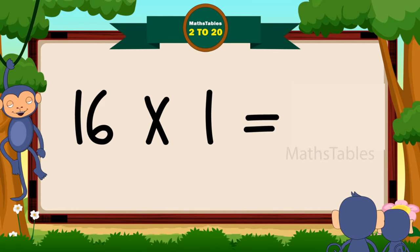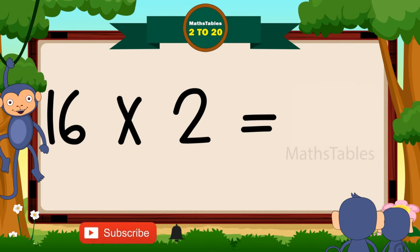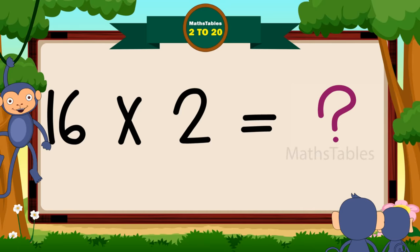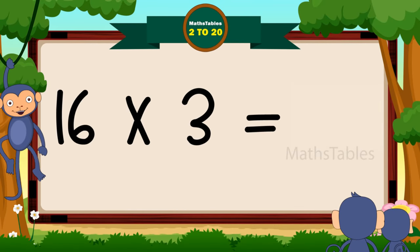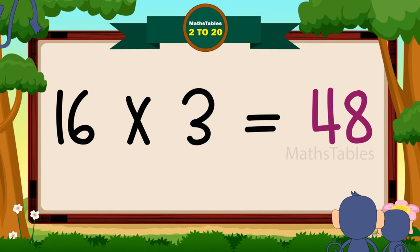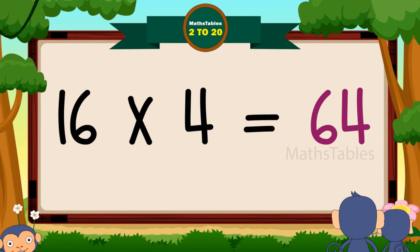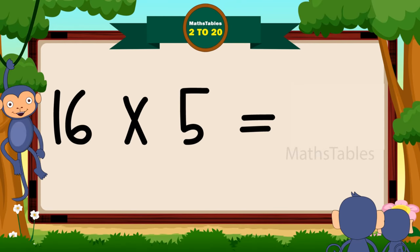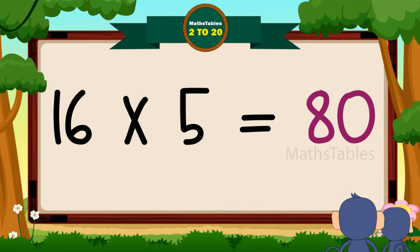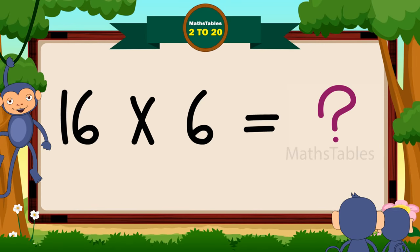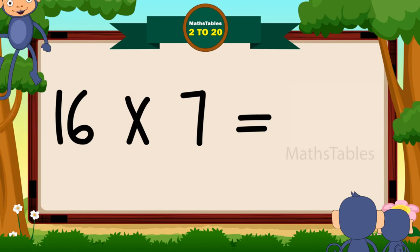16 ones are 16, 16 twos are 32, 16 threes are 48, 16 fours are 64, 16 fives are 80, 16 sixes are 96.